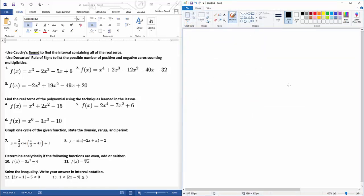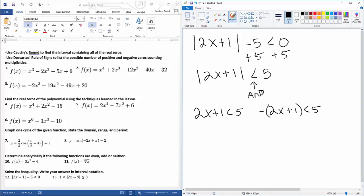So it says solve the inequality, write your answer in interval notation. When we're doing these, absolute value of 2x plus 1 minus 5 is less than zero, so add 5 to both sides. So this is an and statement. And statement is looking where they intersect or overlap with each other. So we just go through and solve it. 2x plus 1 is less than 5, and then negative 2x plus 1 is less than 5. So this one, and then this one here distributing the negative.